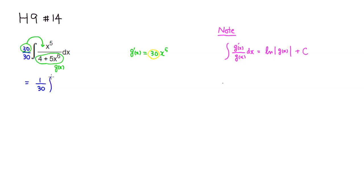Then you have an integral, and now numerator is exactly what we wanted, so you have a 30x to the 5th. Denominator is 4 plus 5x to the 6th power with respect to x. Now we have the exact format, so we know what to do. So this is going to be equal to 1 over 30. Then we have a natural log of absolute value of 4 plus 5x to the 6th power plus some constant c.